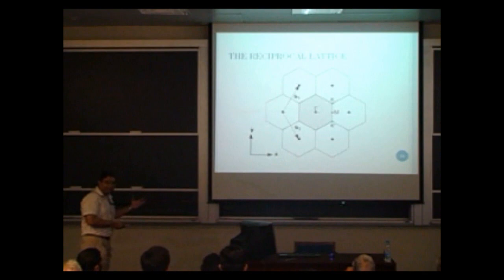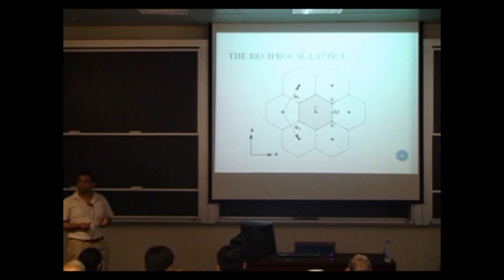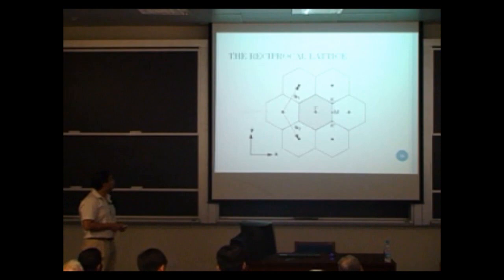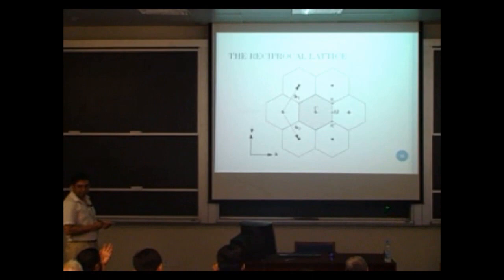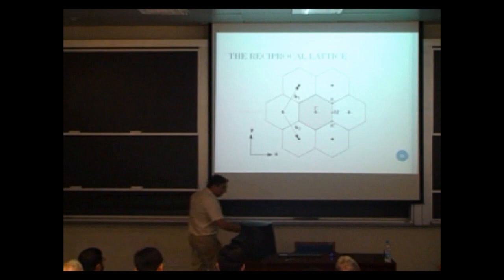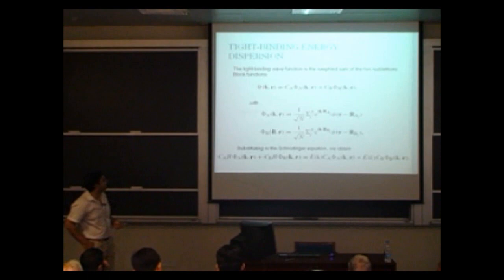That was the direct lattice in real space. Because of the periodicity, it is very useful to do a Fourier analysis and go into reciprocal space. This is the reciprocal lattice where the unit cell — or Brillouin zone — is the primitive unit cell in the reciprocal lattice. A student observes: the real lattice was hexagonal and the reciprocal lattice is also hexagonal. The speaker confirms: yes, both the same — and this symmetry holds for other lattices as well, though not necessarily always.